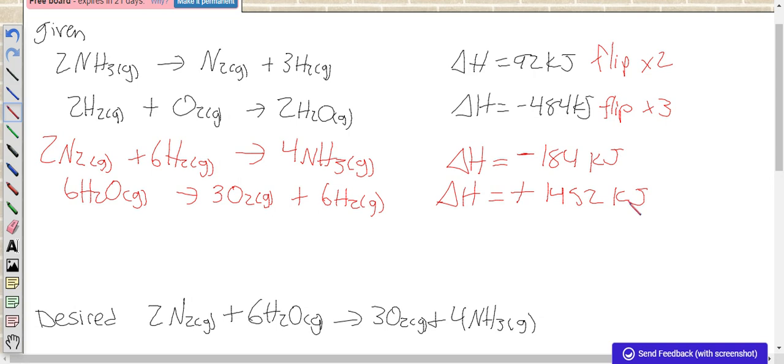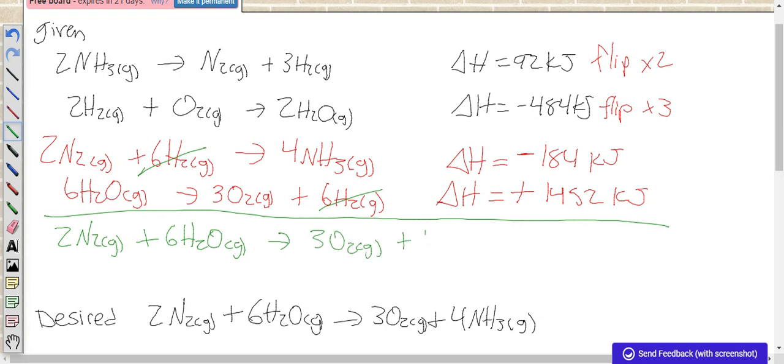All right, so now let's make sure that when we add these equations together we actually are getting the correct equation. The 6H2Os cancel out, and what we have left when we add the equations together is 2N2 gas plus 6H2O making 3O2 gas and 4NH3. That matches our desired, so we can go ahead and add up our enthalpies.